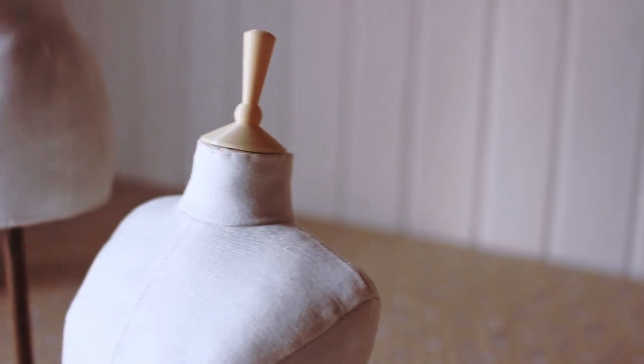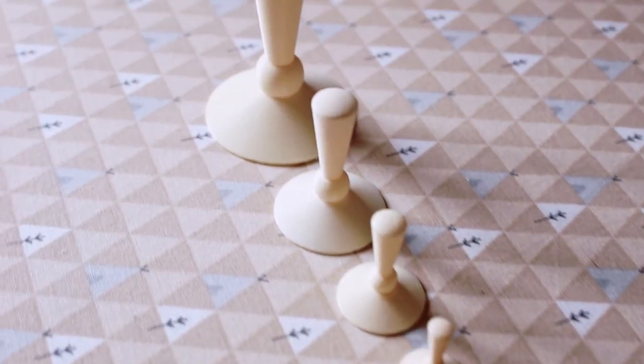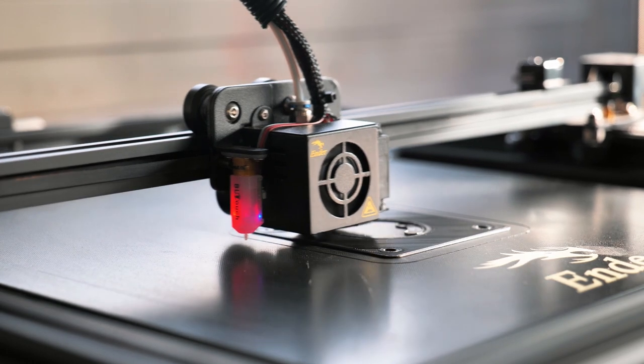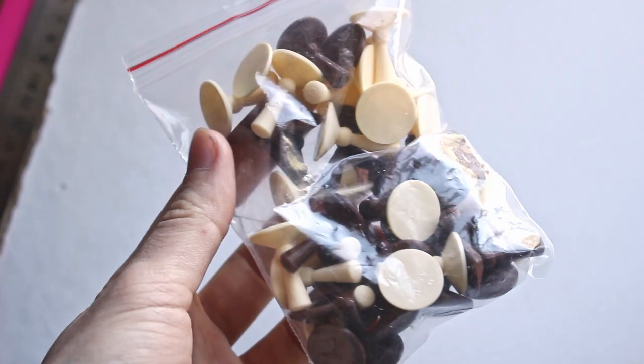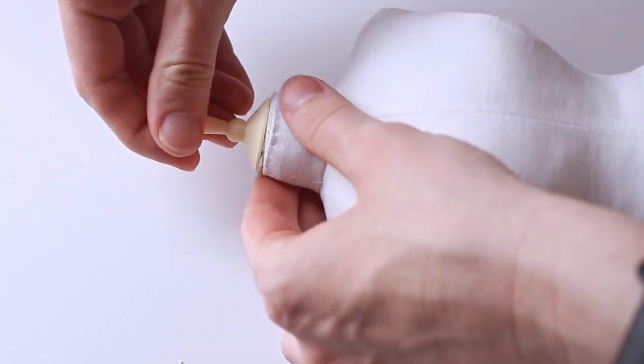I also made a finial. You'll find the STL file for it along with the PDF files after the purchase. You can print it yourself if you have a 3D printer, or ask someone else to print it for you, like I did. Then you can just glue it to the top.